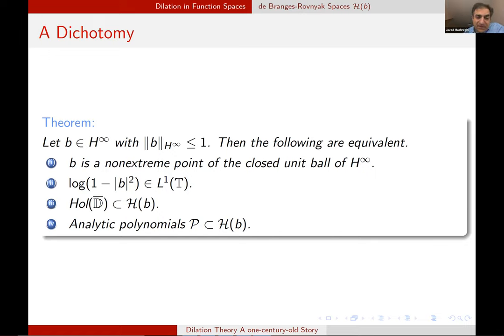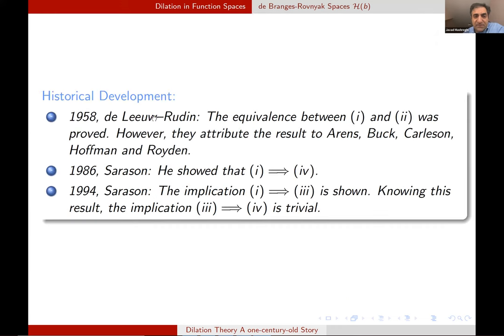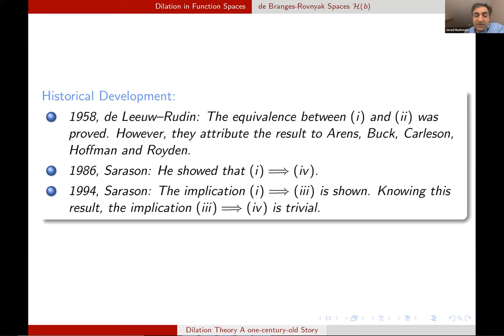The theory of de Branges-Rovnyak spaces is divided into two parts, basically based on this theorem, which characterizes the extreme or non-extreme point of the closed unit ball. The first two parts is by de Leeuw and Rudin. The first part is by de Leeuw and Rudin, but they say that it's obtained during a conference via consultation by Ahrens, Beurling, Carleson, Hoffman, and Royden. And the other two parts and its equivalence to the first two part is done by Sarason. The part that we need is that polynomials or dilations are in H(B) if and only if B is non-extreme. This is something to consider.